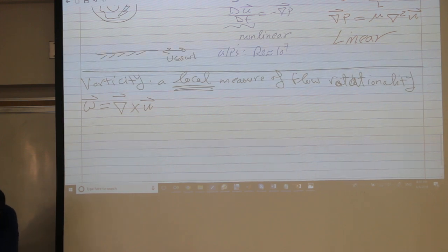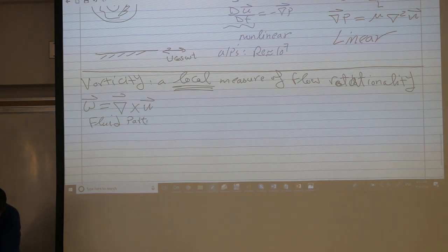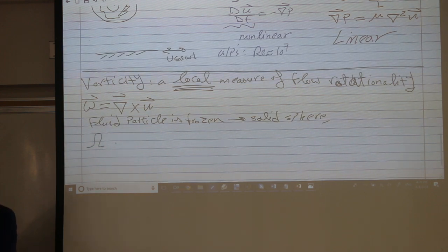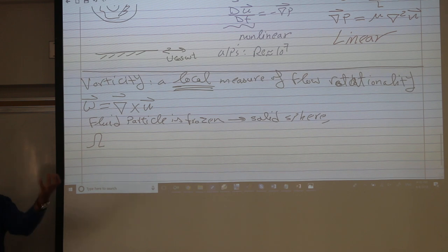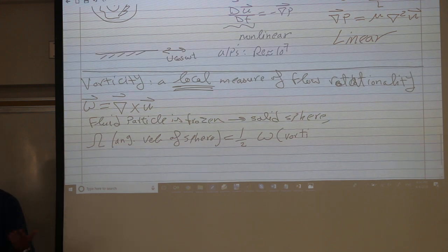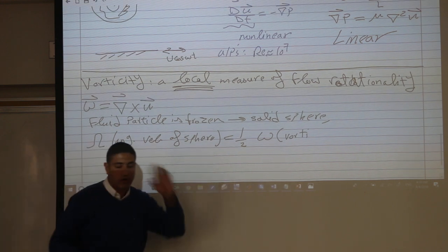So if the fluid particle is frozen to be a solid sphere, the omega, the angular velocity, because we can deal with, as mechanical engineers and aerospace engineers, we can understand very well the angular velocity. The angular velocity of a rigid body. The angular velocity of a sphere. We can measure it, radians per second, we can understand it very much. So the omega, the angular velocity of the sphere is half of vorticity. So you can see they are the same. Your vorticity is the angular velocity of the sphere, but quantitatively, one is twice the other.